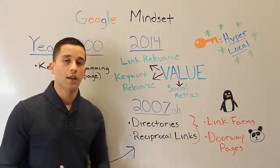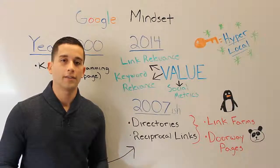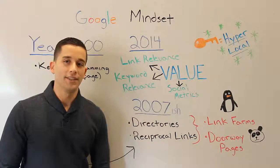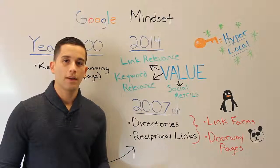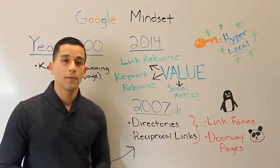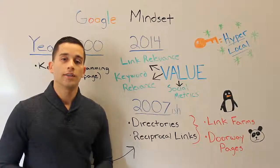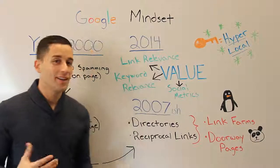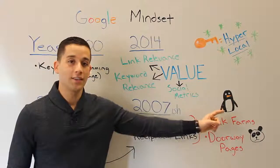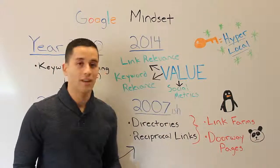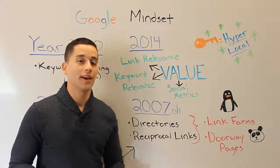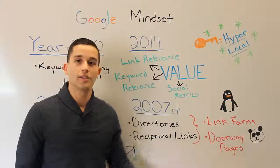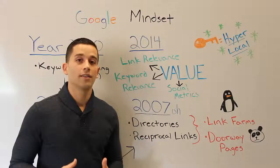What ended up happening is a lot of people were set on gaming the system, and that spawned link farms and, to a lesser extent, doorway pages. A link farm is basically where someone will set up 500 links to your site for $37. What could go wrong? Google released two big changes — the Penguin and Panda updates — and anyone engaging in these black hat SEO manipulation practices was severely impacted.